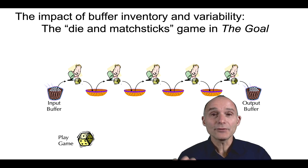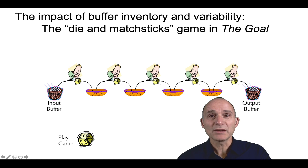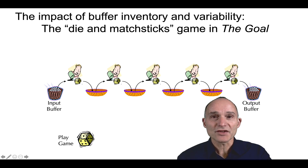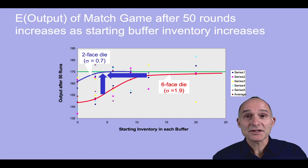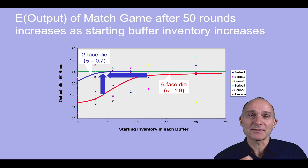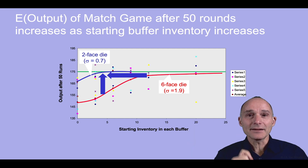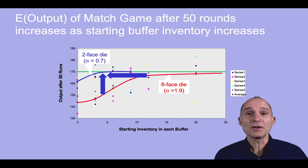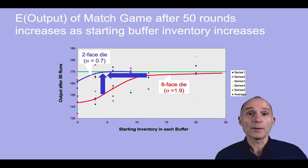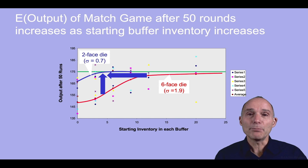The question, however, is how much inventory should we have? To answer that question, we can play a simulation. Below you will see the link to a simple spreadsheet model. I've simulated this matchstick game process for 50 rounds and done that five times, then taken the average. On this graph, you can see that as the starting inventory increases, the expected output improves. The second important consequence is that if I use a die with less variability, we expect the throughput to increase — and it does. So two things you could do: if you reduce variability, you can move up, greatly improving performance; or you can achieve that same performance with less inventory — both of which are great improvements.